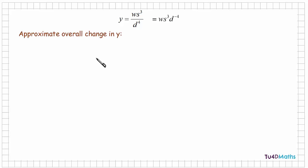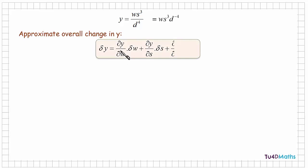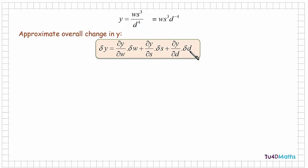And we saw earlier that the approximate overall change in y could be written as the rate of change of y with respect to w times the small change in w, plus the rate of change of y with respect to s times the small change in s, plus the rate of change of y with respect to d times the small change in d.